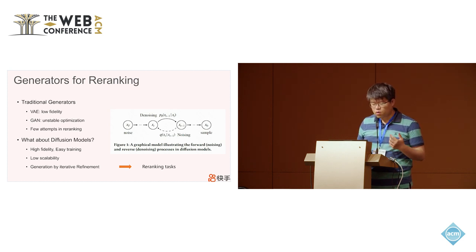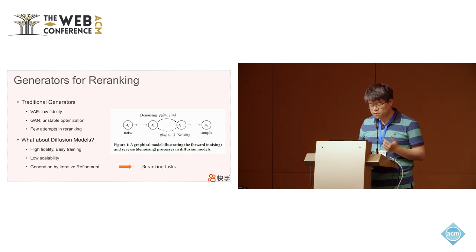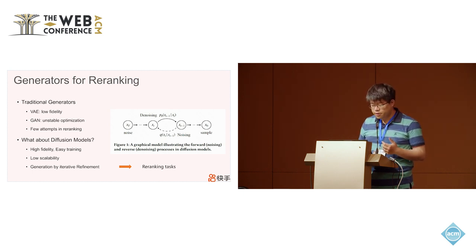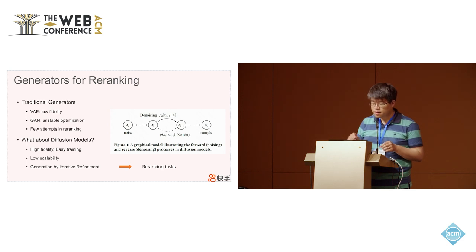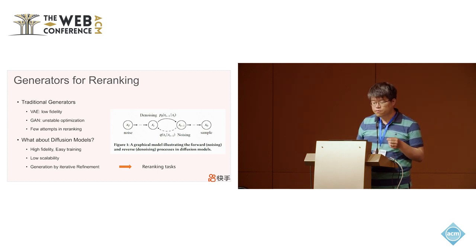So what about diffusion models? They achieve great success in image synthesis tasks and have advantages like high fidelity and easy training, but they also suffer from low scalability. The most important feature of diffusion models is generation by iterative refinement. It first corrupts the sample with noise, then tries to reconstruct the original sample using a parameterized model. The nature of iterative refinement naturally fits the requirements of re-ranking tasks.